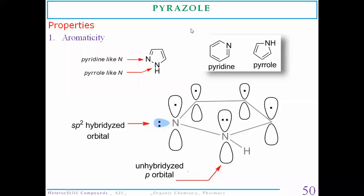We have discussed five-membered rings containing only one hetero atom: furan, thiophene, and pyrrole. Now today we start discussion on a five-membered heterocyclic ring that has two hetero atoms — also known as 1,2-azoles. 'Azole' means presence of nitrogen. In pyrazole, two nitrogen atoms are at the first and second positions, so this is also known as a 1,2-azole.